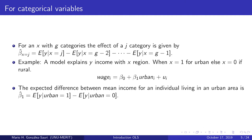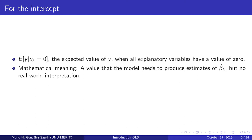As for the intercept, we can interpret it using conditional expectations: the intercept is the expected value of y when all other explanatory variables take a value of zero. The intercept will not always have an economic meaning, but will always have a mathematical meaning as a value the model needs to produce to estimate the beta_k coefficients. To determine if the intercept has economic meaning we need to take into account the theory and intuition behind the model.